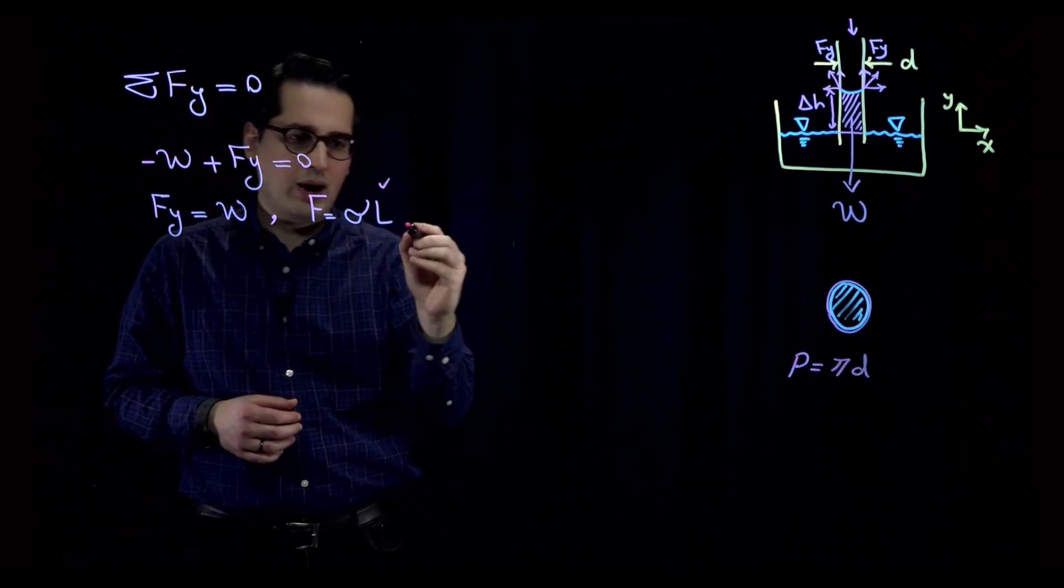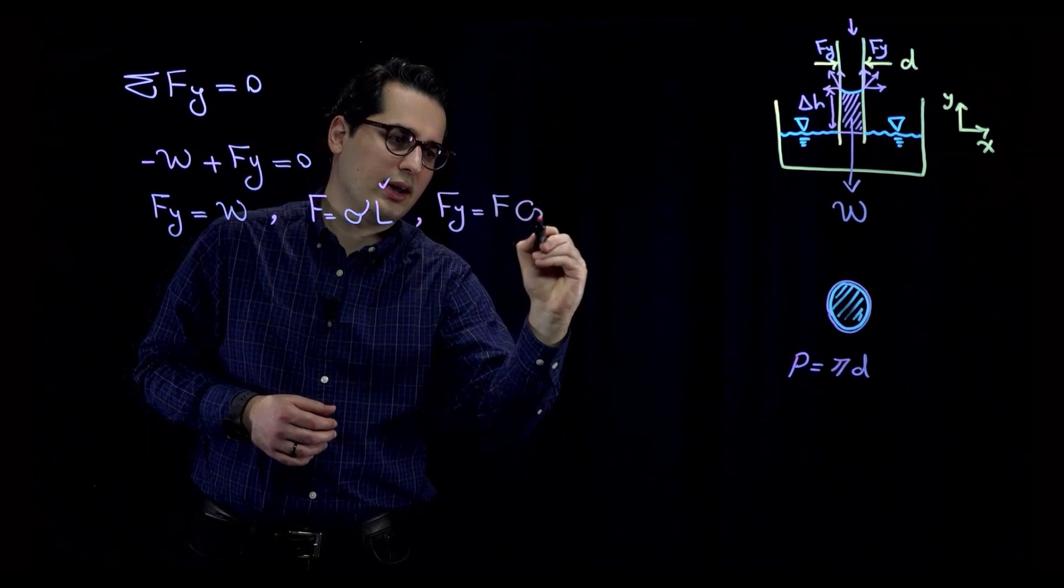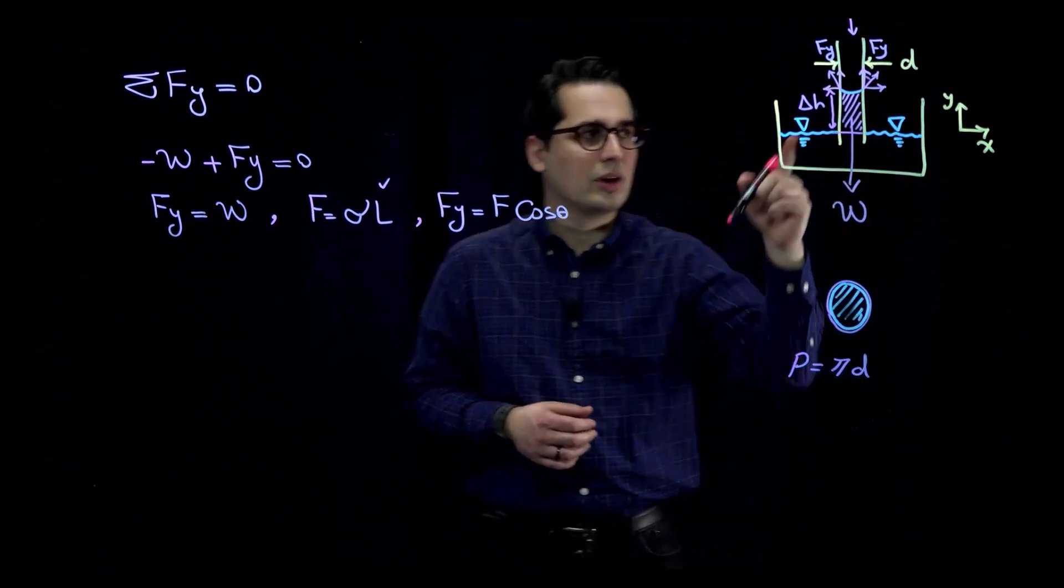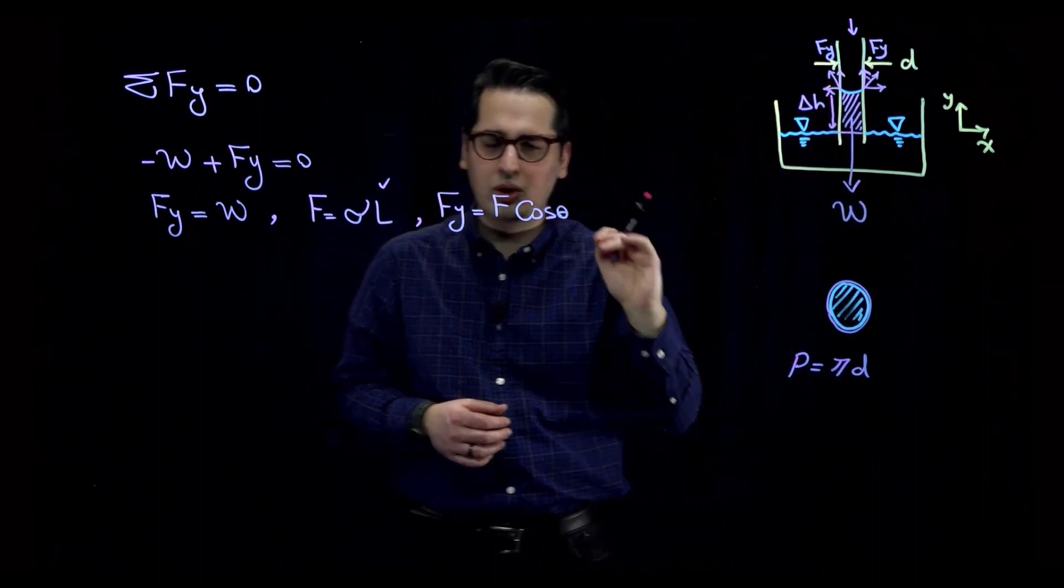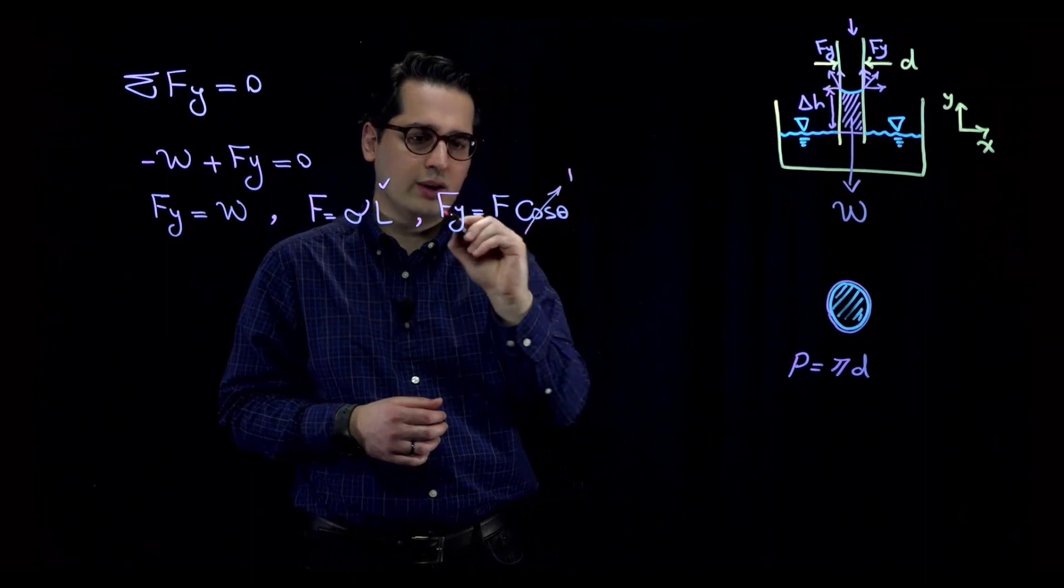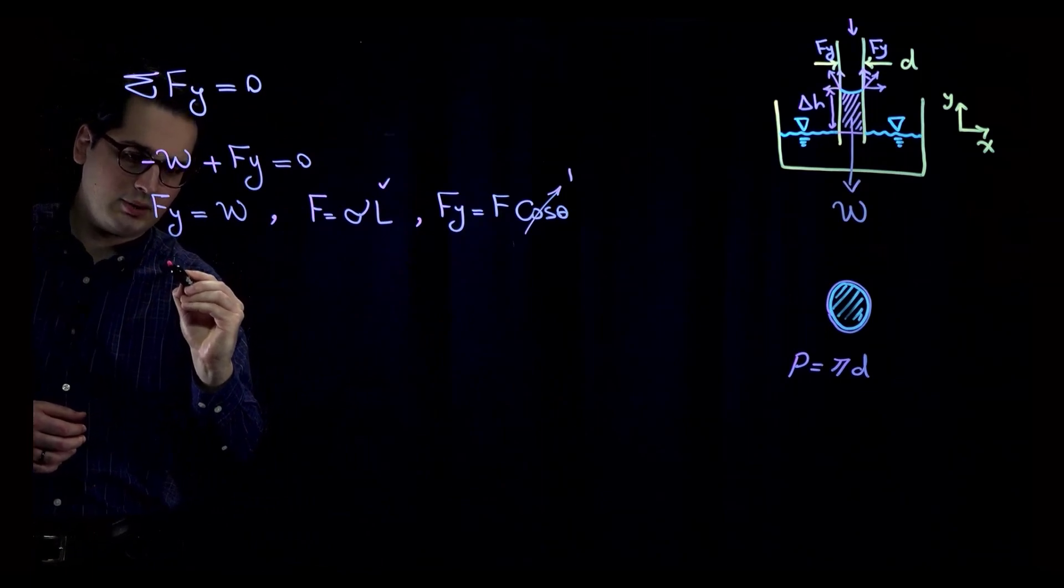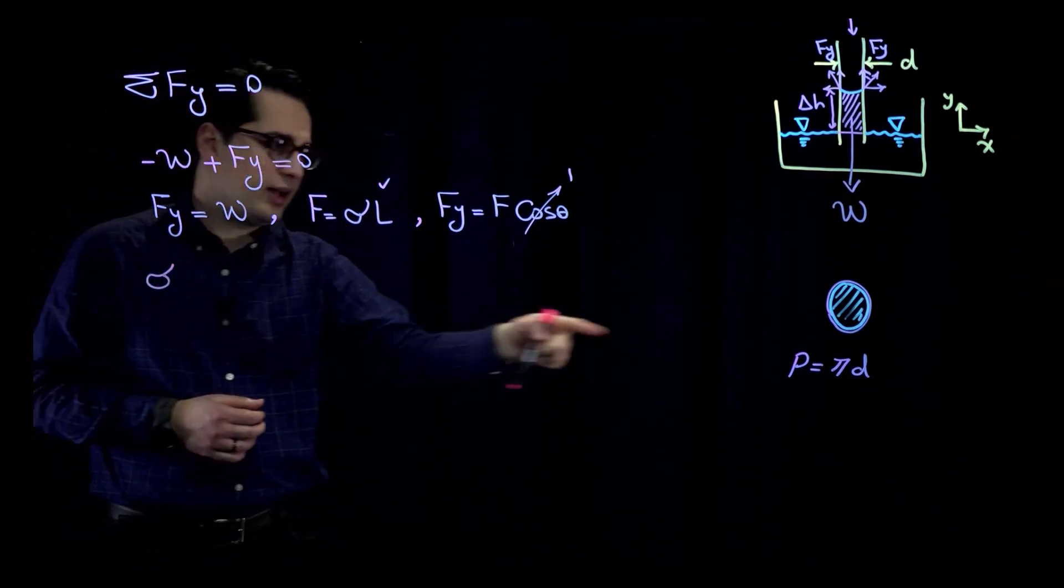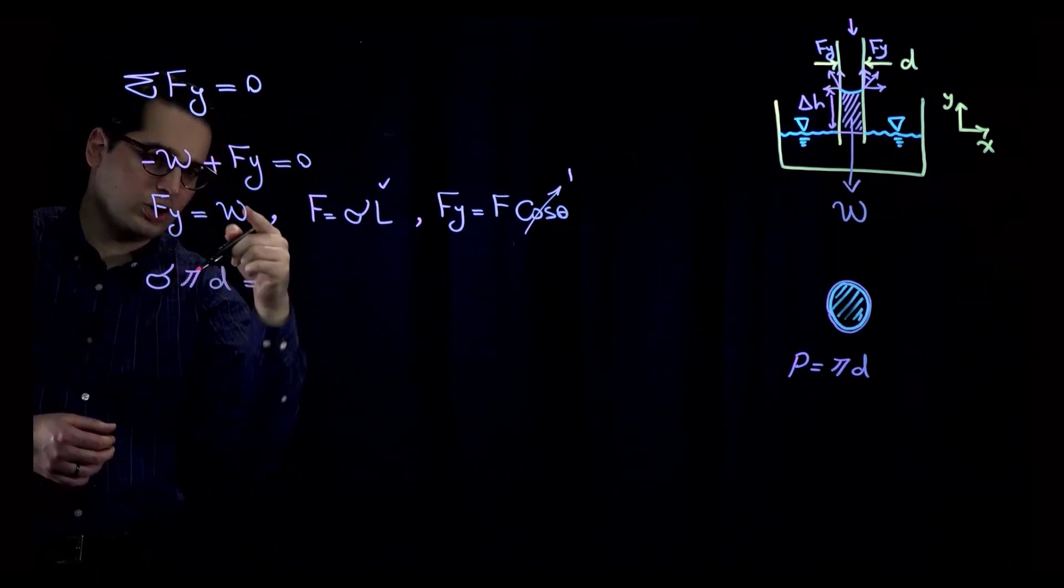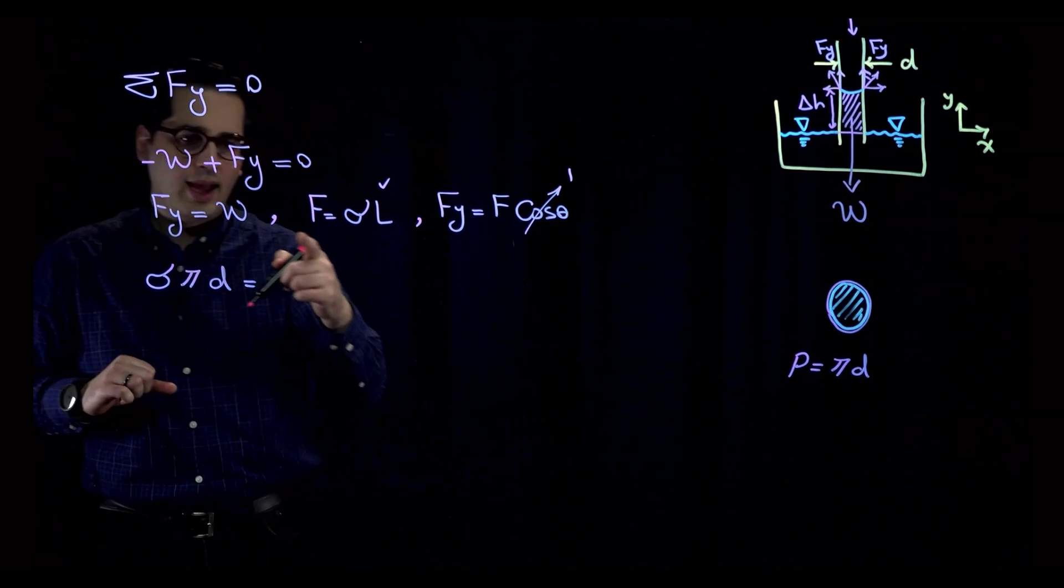Now I also know that F_Y is equal to F times cosine of theta. And theta is this angle over here. But I'm going to assume that this theta is very, very small. And this is a correct assumption for water. So cosine of theta, if theta is very small, would be one. So F and F_Y are equal to each other. Now putting this over here, it would be sigma times, instead of L, I'm going to write pi times D.